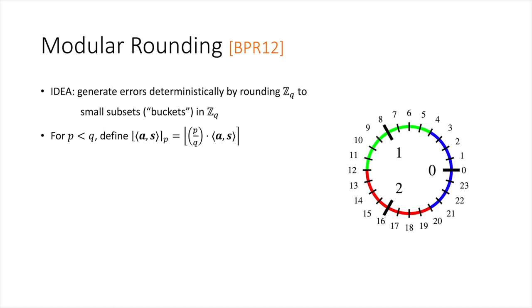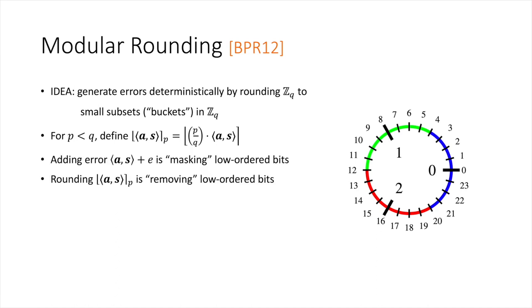These partitions are represented by the subgroup Z mod 3 in this example. In algebraic form, we denote this operation as the rounding function, mapping elements in Z_Q to elements in Z mod P. Intuitively, when we add noise to the inner product AS, we are masking the lower-order bits. Rounding completely removes the lower-order bits—so intuitively, rounding and adding noise have the same effect of masking the lower-order bits from an adversary.